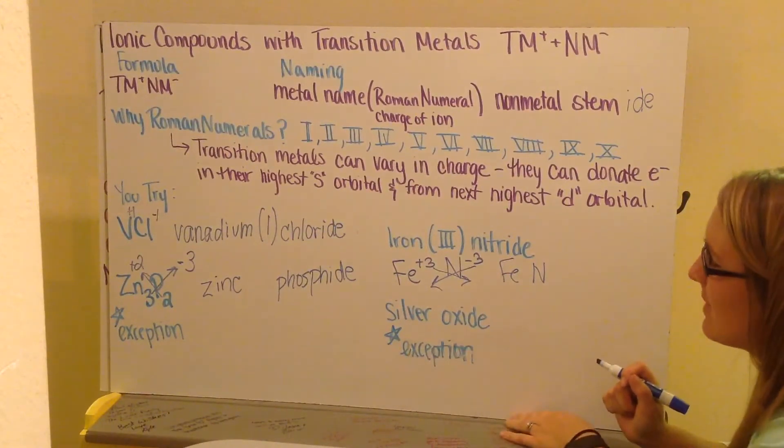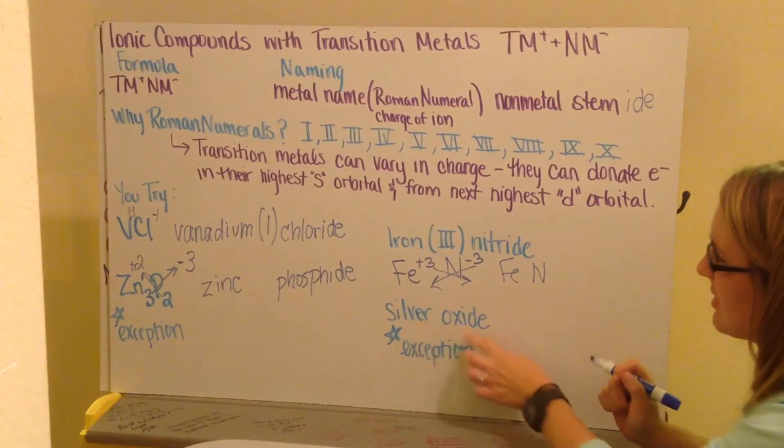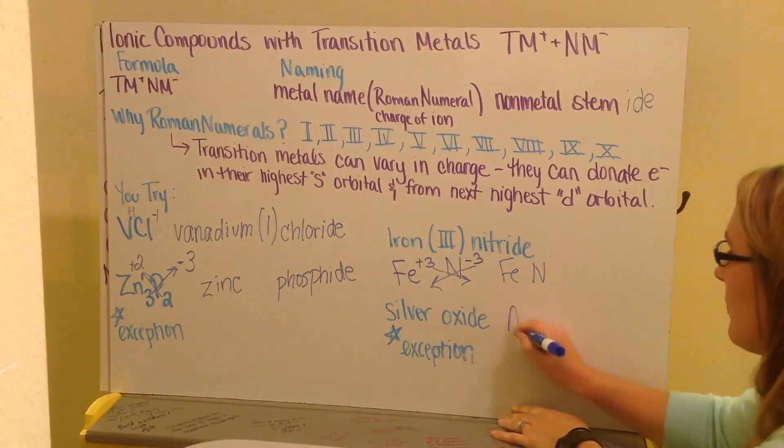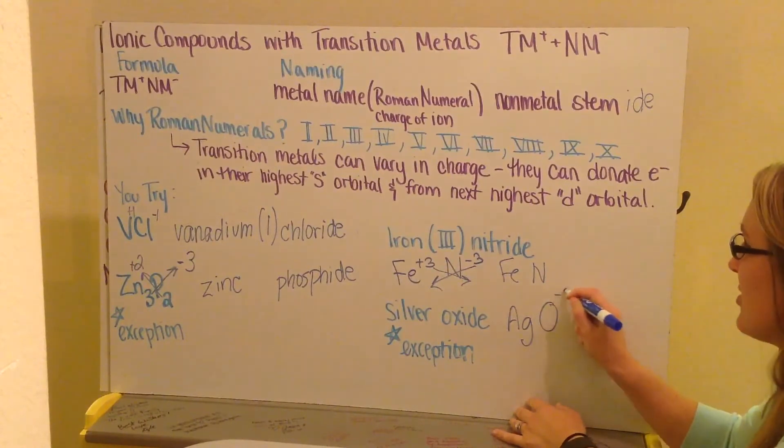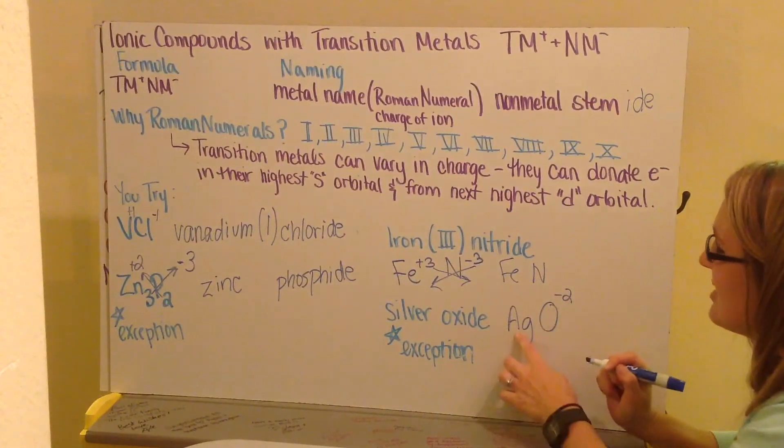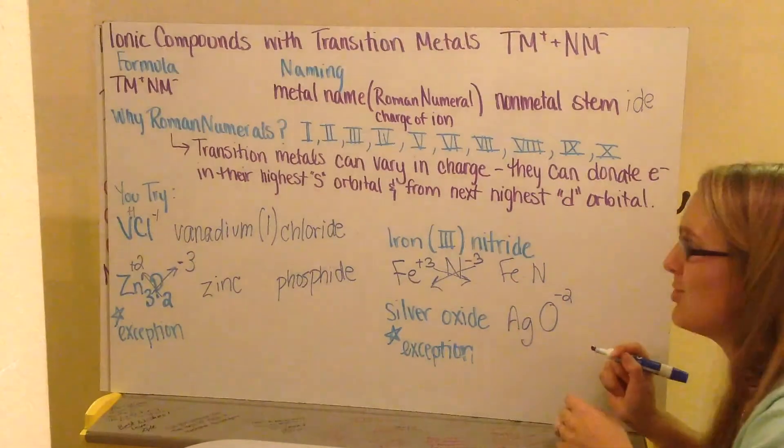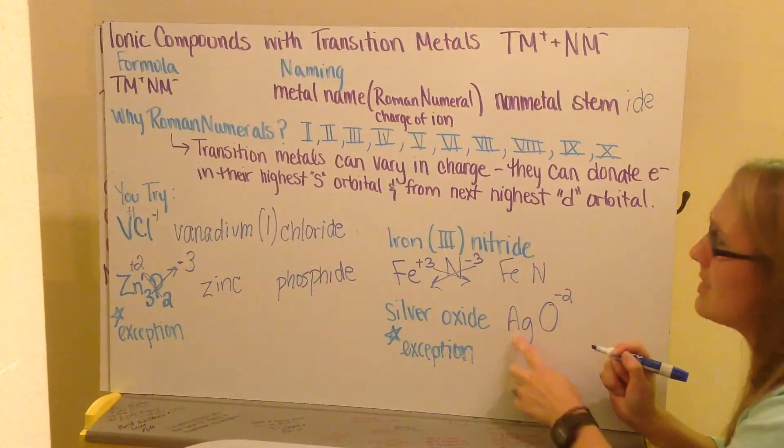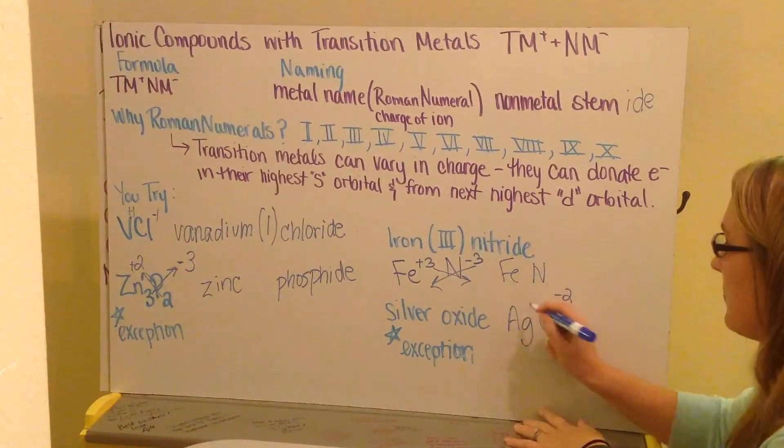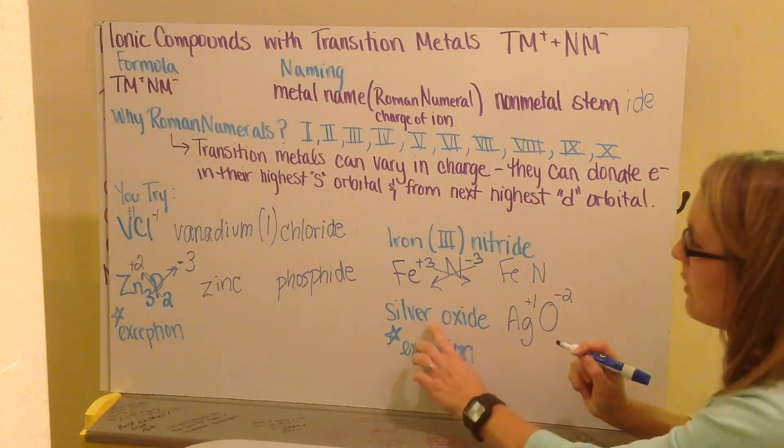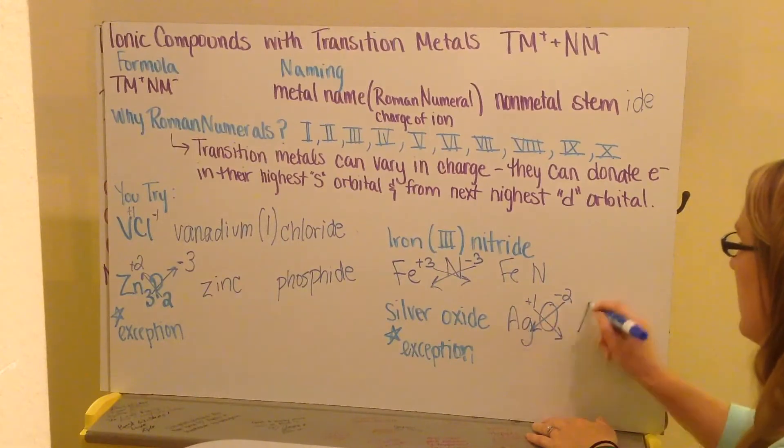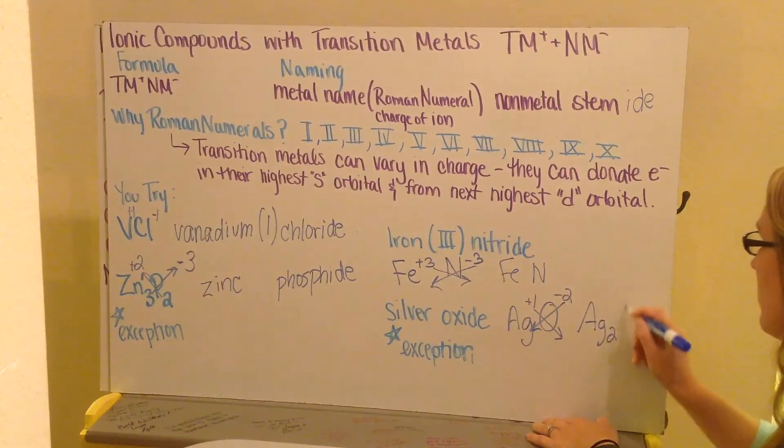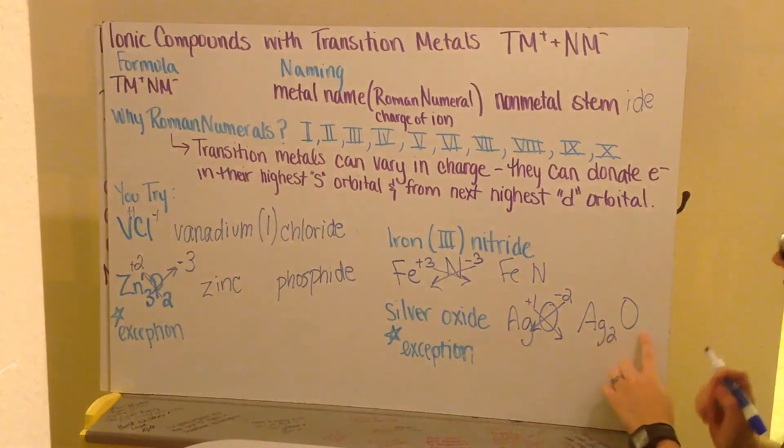Here I have my next one, silver oxide. Silver, Ag, oxide, O, oxygen has a charge of negative 2. Silver is another exception to the rule. Silver always is plus 1 charged. And that's why we don't write our Roman numeral. So I criss-cross my charges down and I get Ag2O for silver oxide.